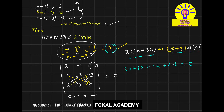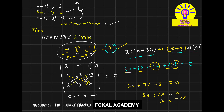Combining like terms: 20 + 14 − 6 = 28, and 6lambda + lambda = 7lambda. So we get 28 + 7lambda = 0, which gives lambda = −28/7. Simplifying, lambda equals −4.